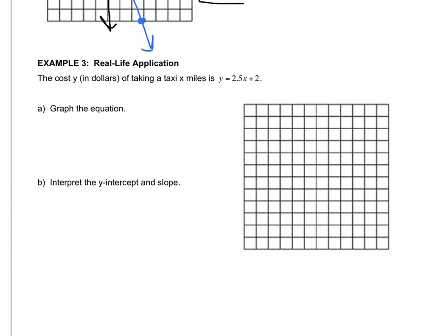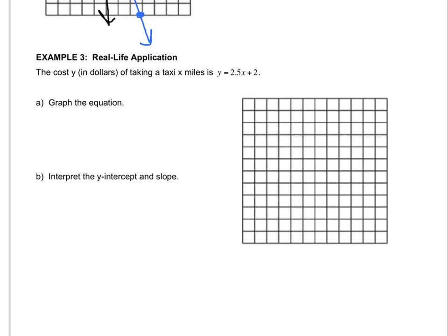Last one together. The cost, y, of taking a taxi x miles is y equals 2.5x plus 2. Well, in order to do letter A, which is to graph it, we have to know what the m and the b are.